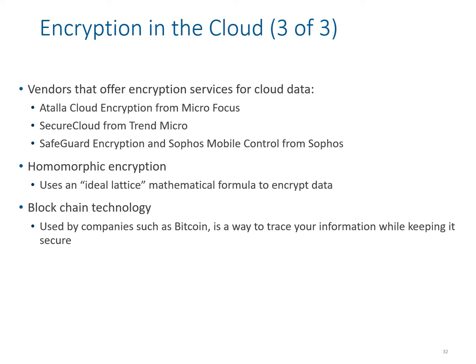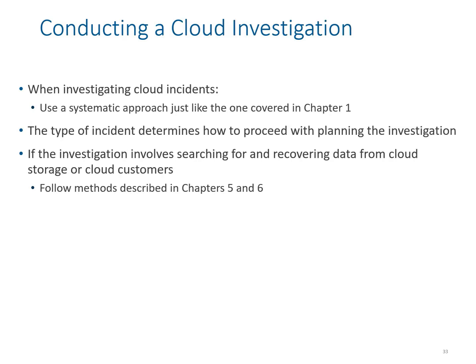Two notable encryption methods are homomorphic encryption and blockchain technology. Blockchain is a more recent development that has been very successful and is used by companies like Bitcoin as a way to trace information while keeping it secure.